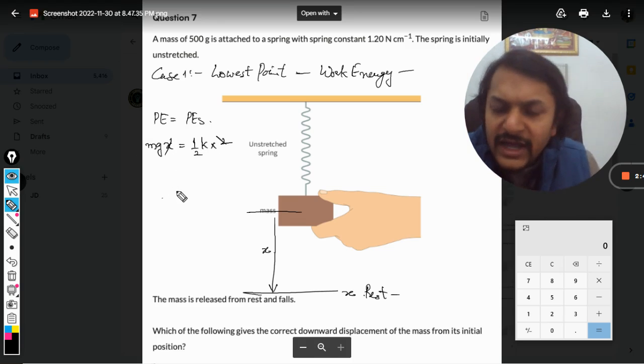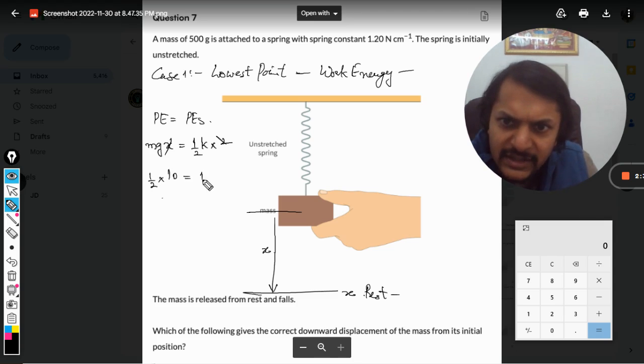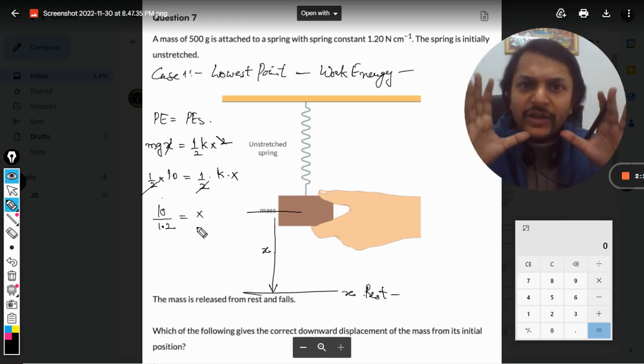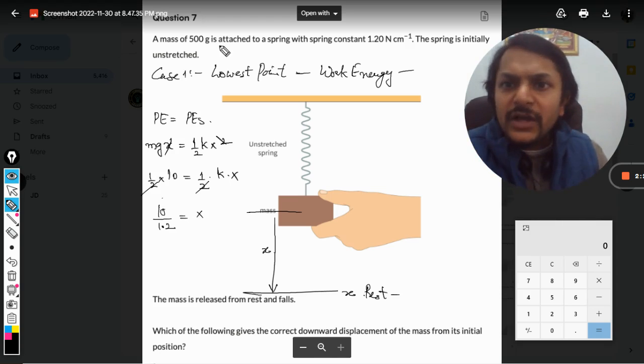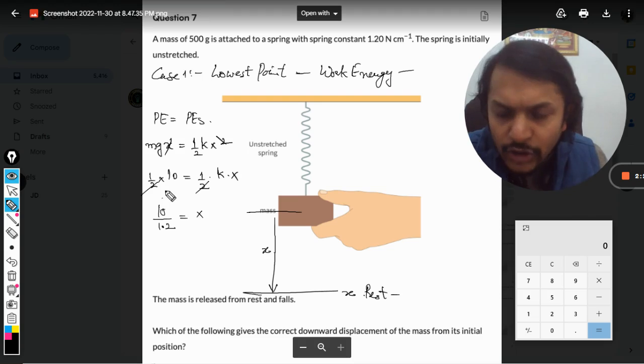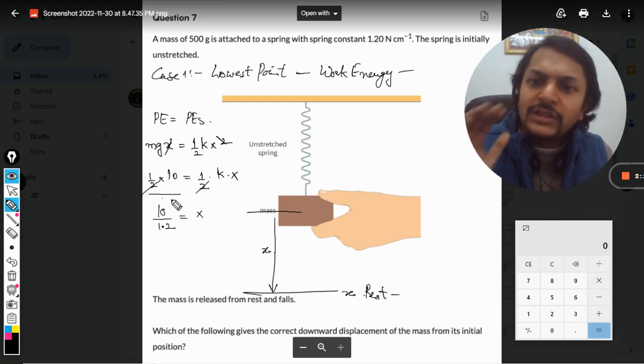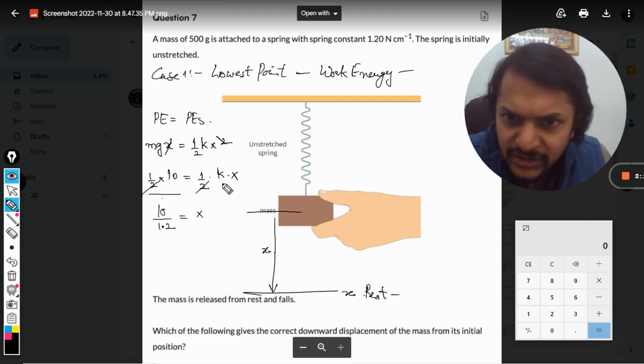And this is k into x. So this 2 and 2 gets cancelled out, so we have 10 divided by 1.2 times x. You see, I'm not talking about the units here - on the left hand side we have all SI units, but here for k the unit is a little different.